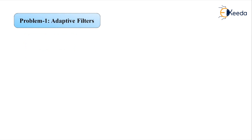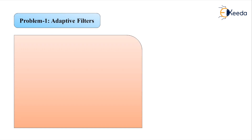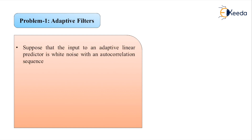We start with the topic titled problem number one, adaptive filters. The problem statement is as follows: suppose that the input to an adaptive linear predictor is white noise with an autocorrelation sequence denoted as r_x(k) equal to sigma_x squared multiplied by delta(k). This is the given information.